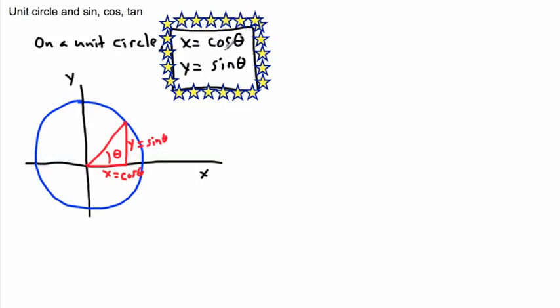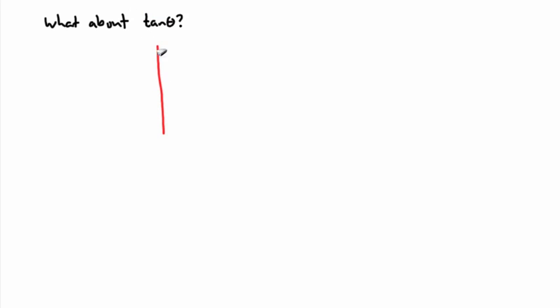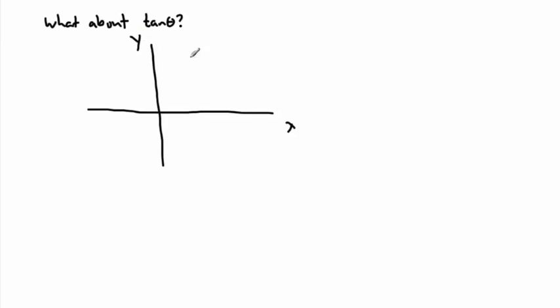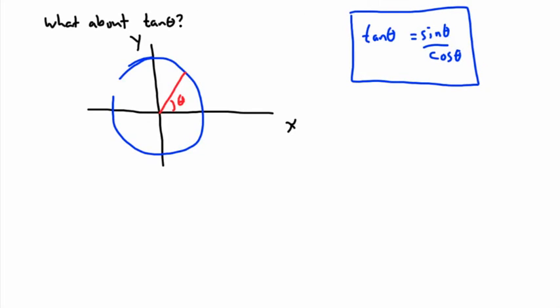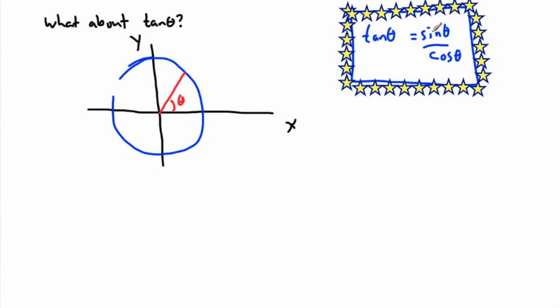What about tangent? We're going to talk about sine, cos, and tangent — we've got sine and cos, so how do we deal with tangent? We can deal with it. If we've got another unit circle with x and y, and I draw another angle theta, we define tan theta as sine theta over cos theta. This is just an absolute definition — this is the definition we use. Put stars by this too.